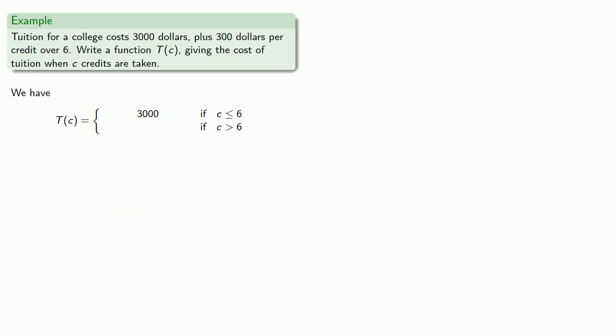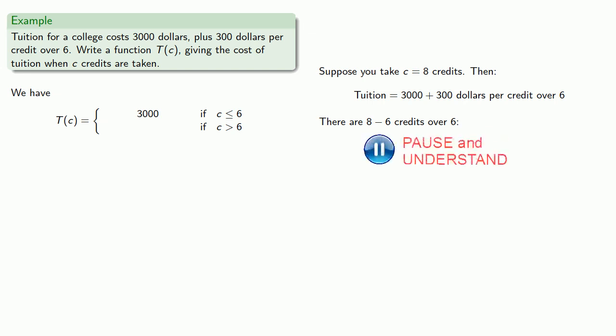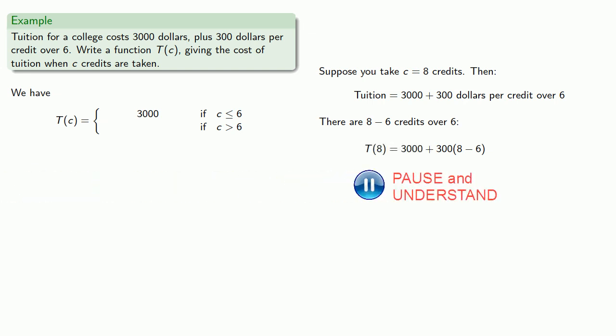What if you take more than 6 credits? So suppose you take 8 credits. Then again, our tuition is $3,000 plus $300 per credit over 6, and this time there are 8 minus 6 credits over 6. Again, it helps not to do the arithmetic. What are we going to do with this amount? Well, since it's $300 per credit over 6, that means we're going to multiply this 8 minus 6 by 300, and then add it to our 3,000. And since c equals 8, everywhere we see an 8, we can replace it with a c and get our formula, which applies wherever c is greater than 6.